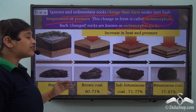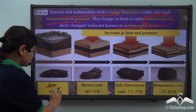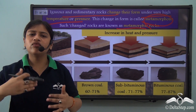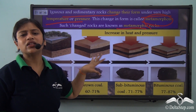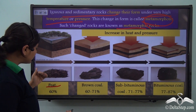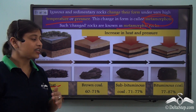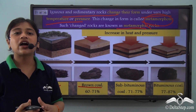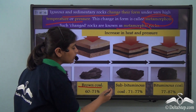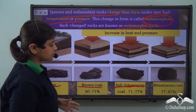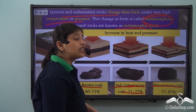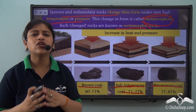Taking the example of coal: in the initial years, coal is known as peat, believed to have only sixty percent carbon content. Over the years, when temperature and pressure work on these rocks, peat changes to brown coal with sixty to seventy-one percent carbon content. From brown coal it changes to sub-bituminous coal with seventy-one to seventy-seven percent carbon content. The best form, bituminous coal, has seventy-seven to eighty-seven percent carbon content.